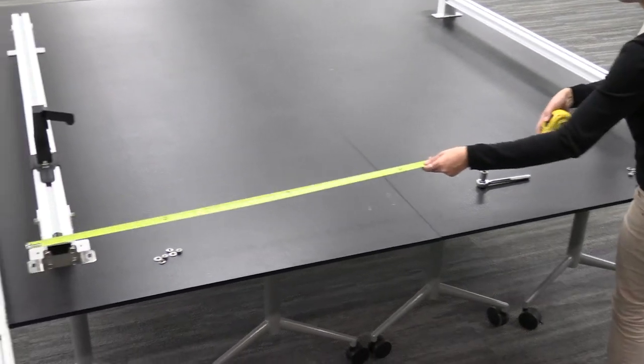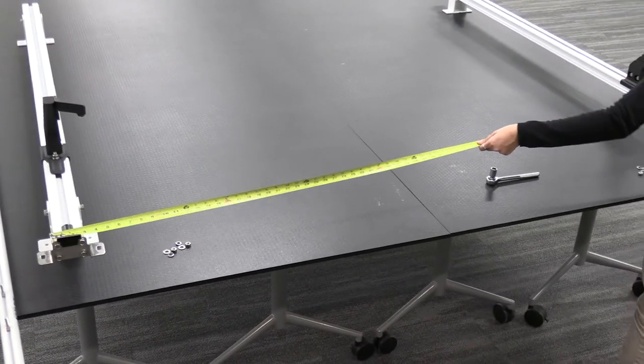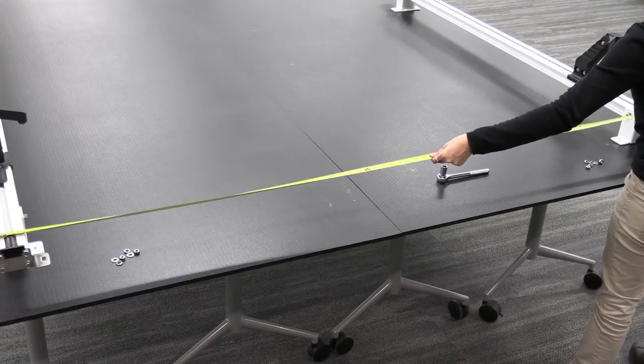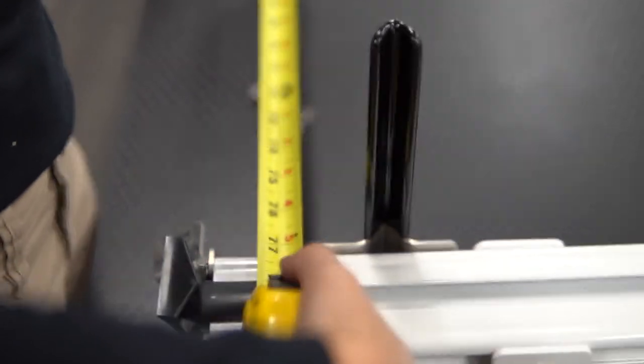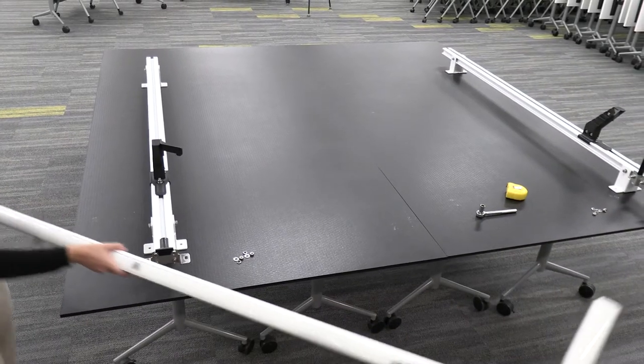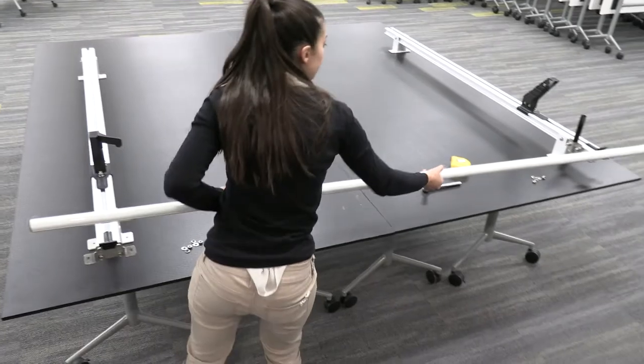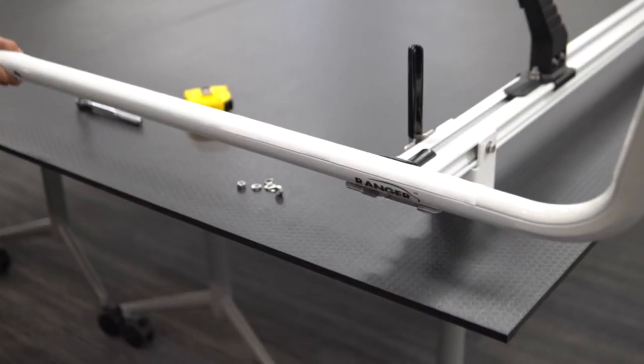Set your crossbars apart to the correct distance according to the install guide. There are 65 inch and 77 inch versions. Then, lay the ski across them. Be sure the curved end of the ski goes on the front crossbar.